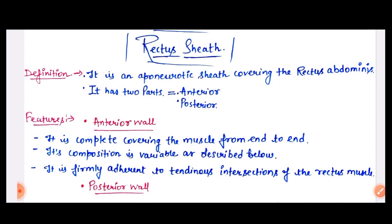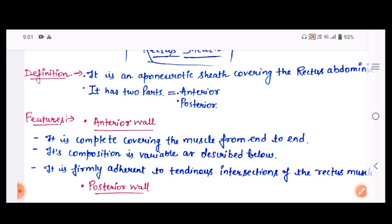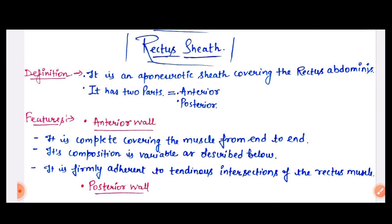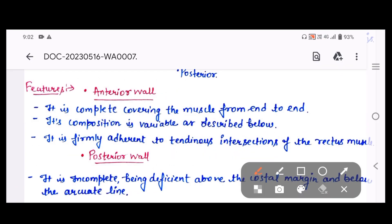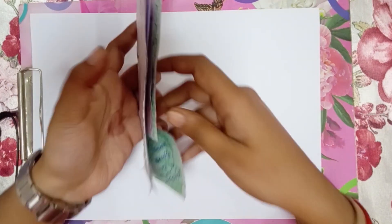Let's see the rectus sheath. The definition of the rectus sheath is that it is an aponeurotic sheath which covers the rectus abdominis, and it has two parts: anterior and posterior. If we see the features, the anterior wall is a complete covering of the muscle from end to end.